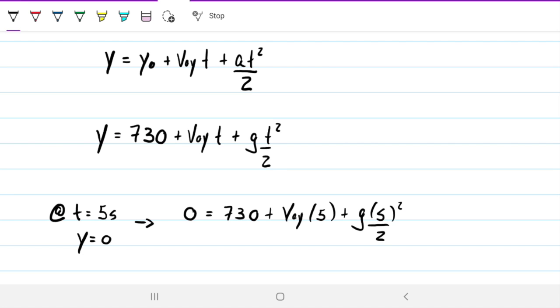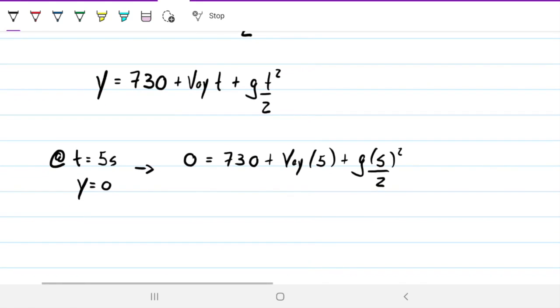And note that our only unknown in this equation is V0Y. And so we can solve for V0Y. V0Y. And that will be 730 minus 121.5 meters per second.